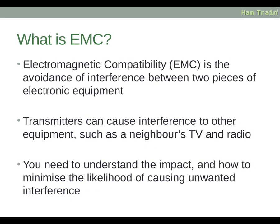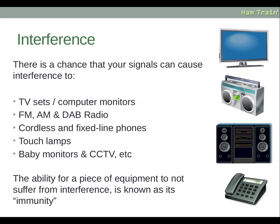So what is EMC? It stands for electromagnetic compatibility, and it's the avoidance of interference between two pieces of electronic equipment. Transmitters can cause interference to other equipment such as a neighbour's TV or radio, and you need to understand the impact and how to minimise the likelihood of causing unwanted interference. Your signal can cause interference to TV sets, computer monitors, FM, AM and DAB radio, cordless and fixed line phones, touch lamps, baby monitors, CCTV, and various other things.